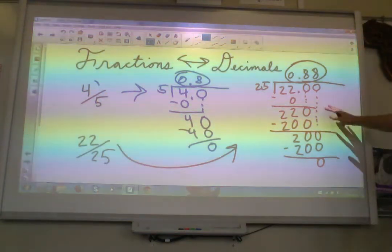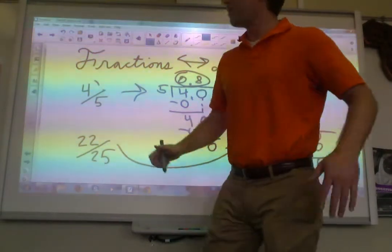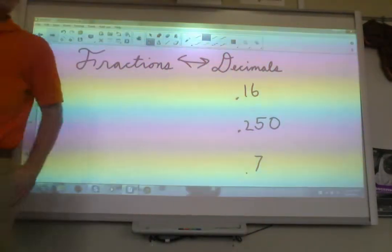22 over 25 as a fraction becomes 0.88 as a decimal. So this is a little bit longer, more complicated, but just remember, top number divided by bottom number, that's it.